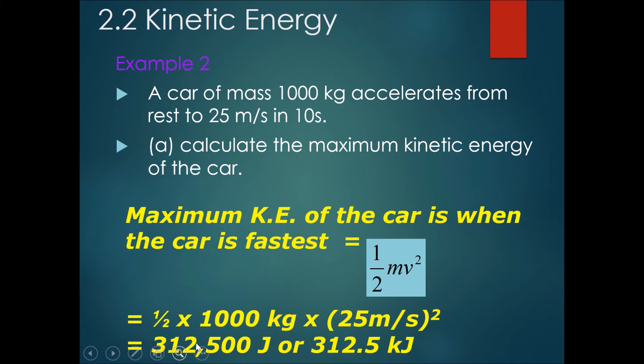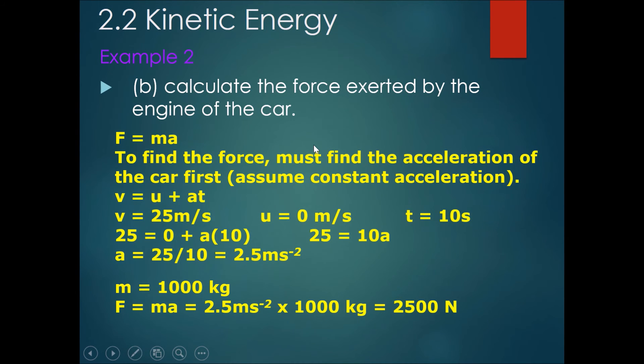Then perhaps in collaboration with chapter 3, they may ask you to calculate the force exerted by the engine of the car. So we use the formula F equals ma. To find the force, we must find the acceleration of the car first. We assume constant acceleration, then we can use this formula: v equals u plus at. V equals 25 meters per second, u equals 0 meters per second, t equals 10 seconds.